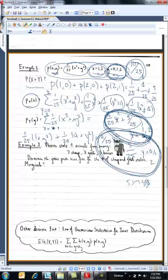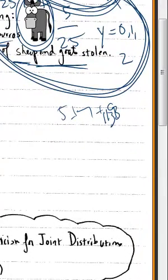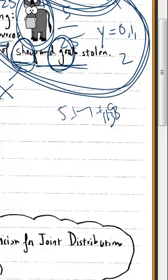Thieves stole 4 animals from 7 sheep, 8 goats, 5 burros. I didn't know what a burro was. So here's a nice picture of a burro. Determine the joint probability mass function for number of sheep and goats stolen. So I'm gonna let x be number of sheep stolen, y be number of goats. Let's get the joint, P of x, y.